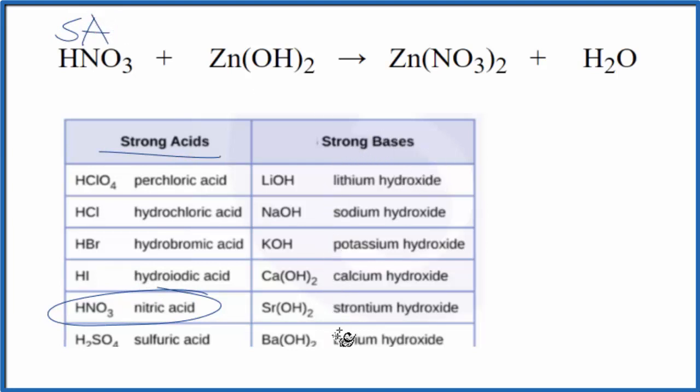We don't see zinc hydroxide here on our list of strong bases, so it's not going to be a strong base. It's going to be a weak base, but we know it's a base. We have the hydroxide group here bonded to this zinc metal.